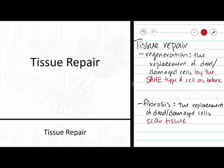Let's take an organ — say your liver. If you damage your liver by excessively drinking, then you are going to harm some of those cells in your liver. Your cells in your liver do detoxification; they metabolize nutrients and make them ready for your body to use. You need those cells, so regeneration of those cells is going to replace your liver cells with liver cells.